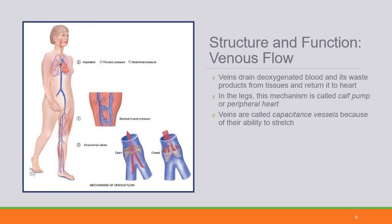The venous system from the legs has what we call a calf pump or peripheral heart, where the function of inspiration changes thoracic and intra-abdominal pressure, and walking changes skeletal muscle pressure on the vessels. A system of valves within the lumen of the vessel helps promote adequate blood flow back to the heart. With varicose veins, you lose the integrity of the valves and the compression of the vessels, leading to pooling and edema. Veins are called capacitance vessels because of their ability to stretch, but a healthy vessel will contract again.